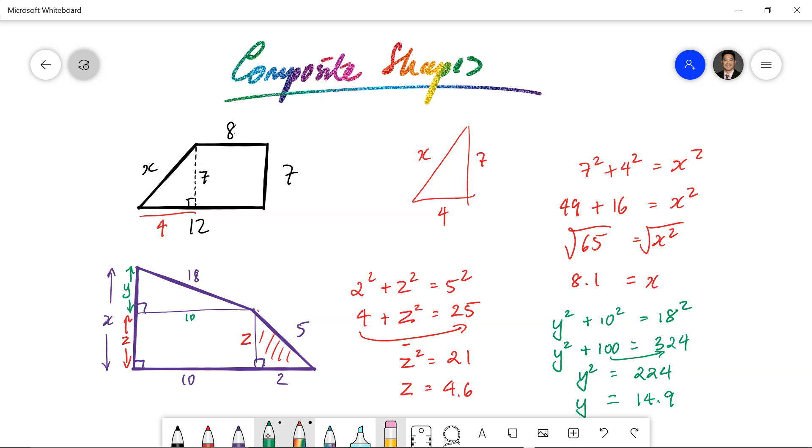Okay, so if this is 14.9, and this part is 4.6, then the total for x is going to equal, 14.9 plus 4.6 is equal to 19.5. All right, so there's that question.